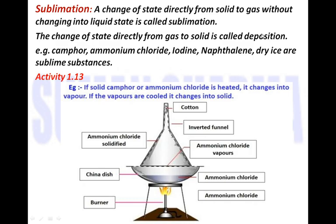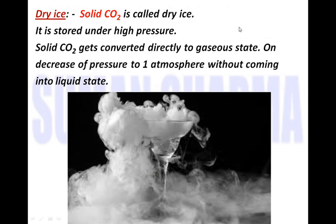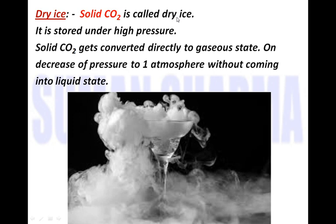Dry ice is solid carbon dioxide (CO₂). Carbon dioxide in its gaseous state can be converted into solid state by applying pressure — this solid CO₂ is called dry ice, stored in containers under high pressure. Dry ice can be directly converted back into gaseous state by absorbing heat and decreasing pressure — it goes from solid to gas without passing through liquid state. That is why it is called 'dry' ice: there is no liquid state involved.